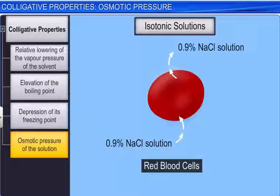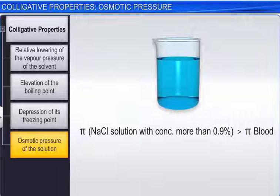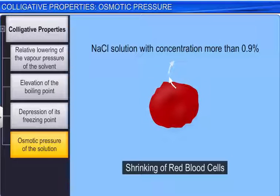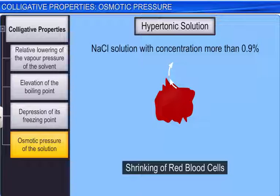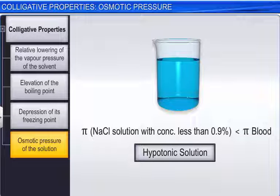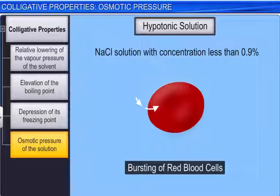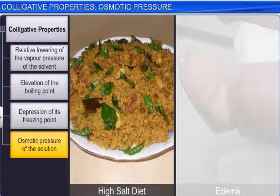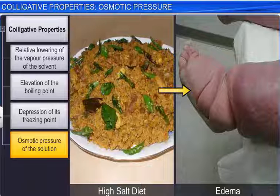A pure sodium chloride solution with a concentration more than 0.9% mass by volume is called a hypertonic solution, and red blood cells shrink when placed in this solution. It is important to note that a high intake of salt in the diet can lead to a higher concentration of fluid in the body tissues because of osmosis. This will result in swelling and puffiness of body parts, which is known as edema.